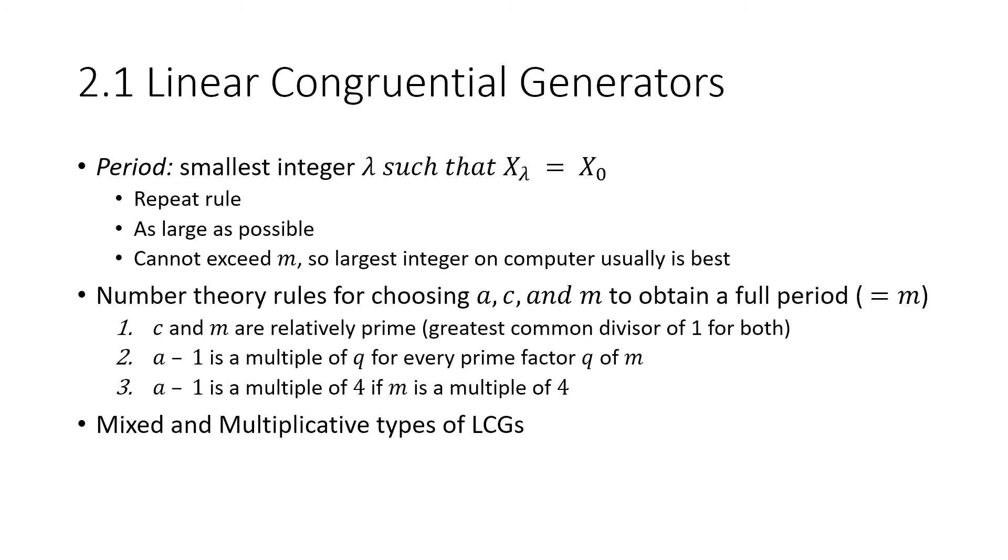With linear congruential generators, there is something called a period, and this is a very important aspect to pay attention to. They use lambda to express the period because that is the number of terms that aren't repeating. They call this the repeat rule. We want the period to be as large as possible so it comes across as random, because if there are numbers being repeated, then somebody can pick up on the cycle and it's no longer really random. That's why we call this a pseudo random process. The period cannot exceed M.